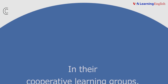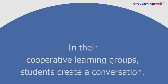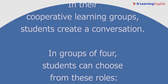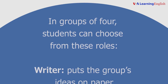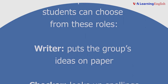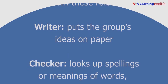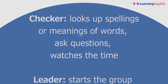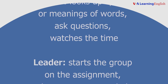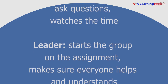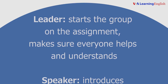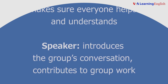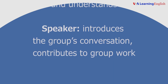Cooperative learning. In their cooperative learning groups, students create a conversation. In groups of four, students can choose from these roles. The writer puts the group's ideas on paper. The checker looks up spellings or meanings of words, asks questions, and watches the time. The leader starts the group on the assignment and makes sure everyone helps and understands. The speaker introduces the group's conversation and contributes to group work.